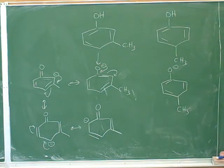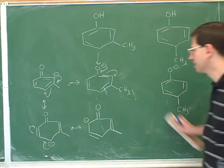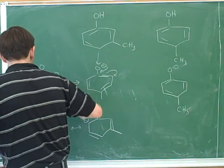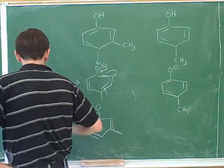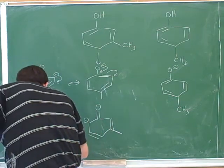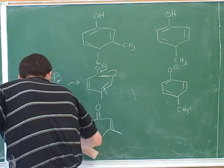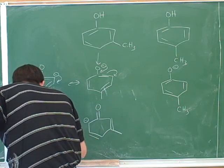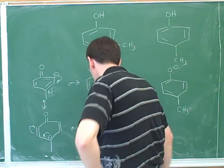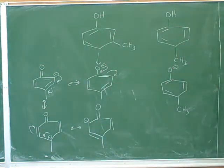In the other structure I drew the resonance for, the negative charge is right on the carbon adjacent to the methyl group. If the methyl group starts out in the parent position, then there's one really bad resonance structure.